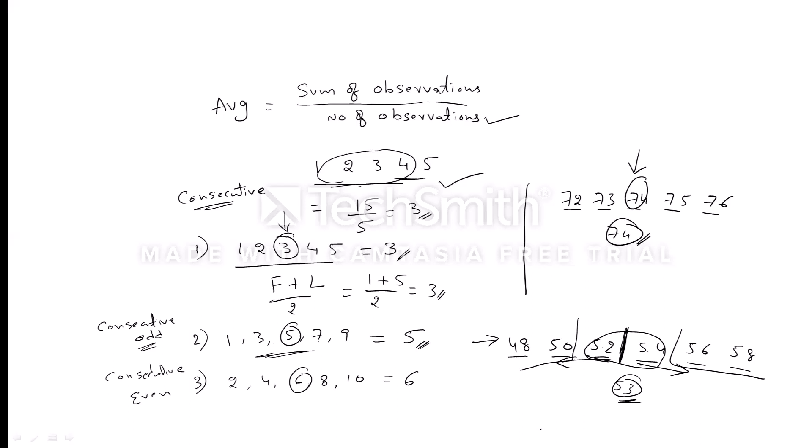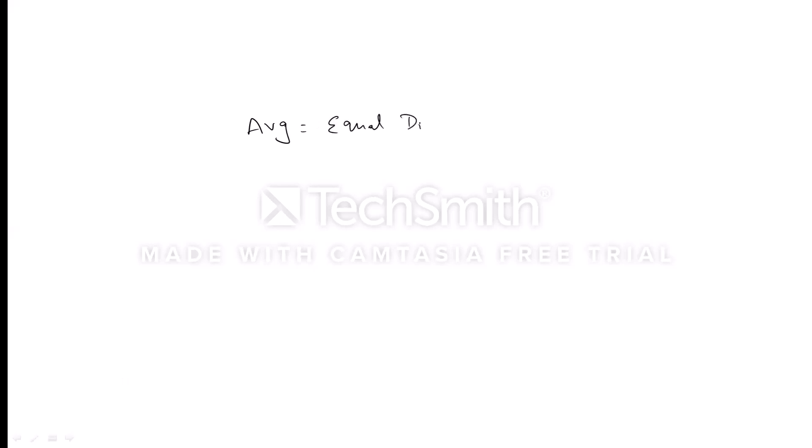Now let me give you one more important rule in average — this is the most important one and most likely to appear in competitive exams. I will explain a simple way to understand the concept of average. As we discussed, average is sum of observations divided by total number of observations, but I also want to give one more definition: average is nothing but equal distribution.